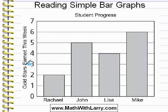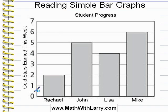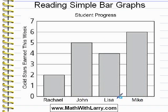Then we have two axes. Along the vertical axis, it says Gold Stars Earned This Week. So we're going to see something about how many gold stars some students earned during a particular week. Also along the vertical axis are numbers from zero to seven, so this will actually show us how many stars they earned. Now along the horizontal axis, we have the names of four different students. So what we can see so far is that this chart will show us how each of these four students are doing this particular week as far as gold stars are concerned.